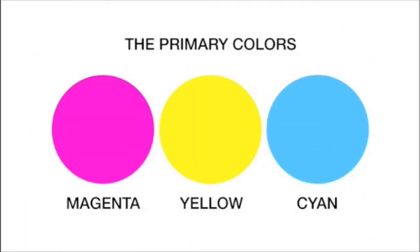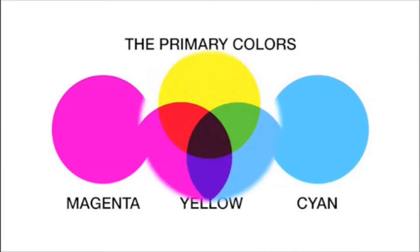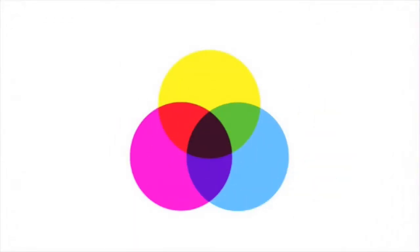Now let's return to our first slide of magenta, yellow, and cyan, and move these three primaries into a color wheel grouping. The overlap of these three primaries shows them making the three secondary colors red, green, and purple, with black in the center, which is all three overlap.